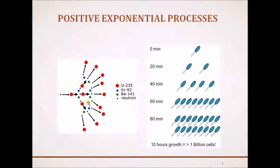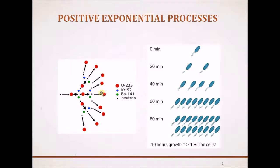Examples of this growing exponential process include: first, the output of a chain reaction — that is, the radioactive nuclei coming out of a chain reaction basically grow exponentially. The next example is the multiplication of bacteria cells.